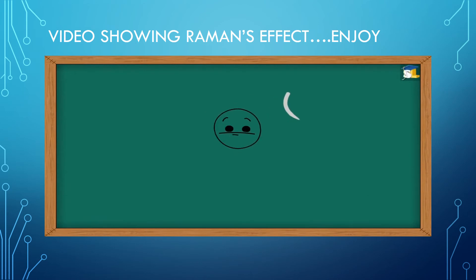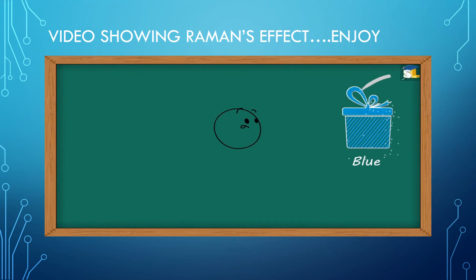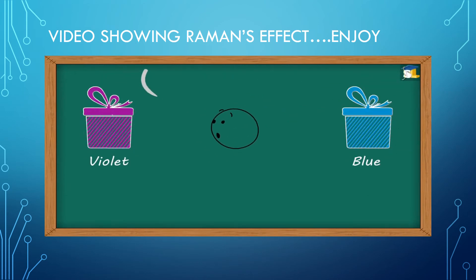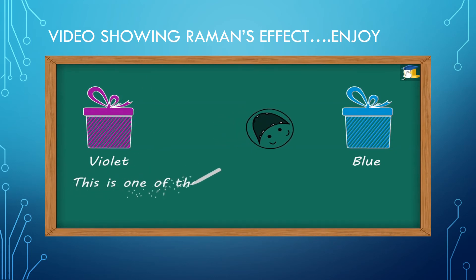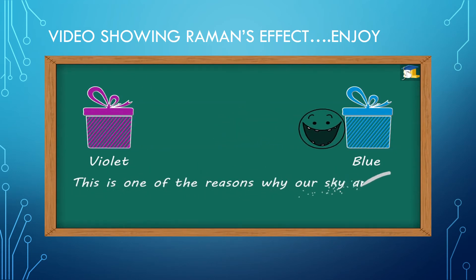Do you think that our eyes have a natural inclination towards blue as compared to violet? Yes! This is one of the reasons why our sky appears blue and not violet.